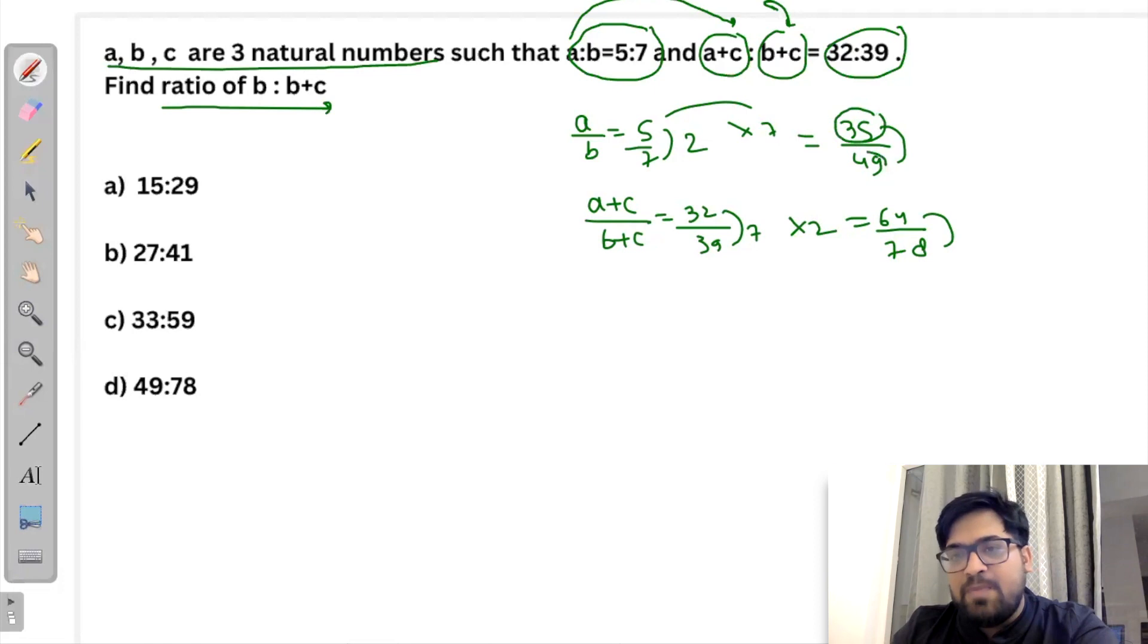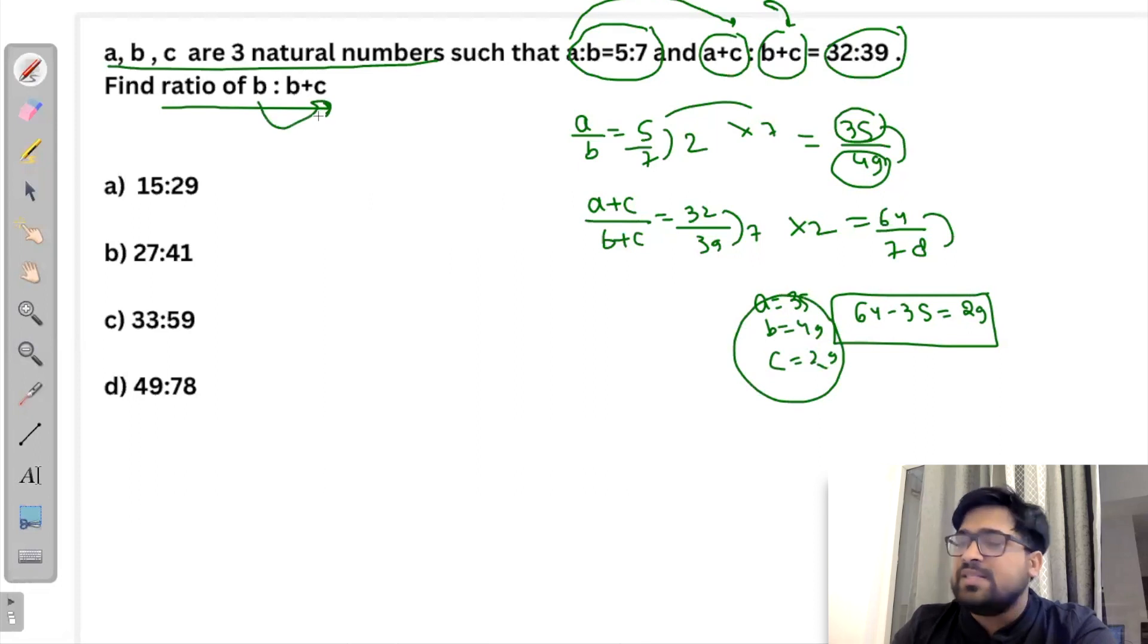Ki ye A hai, ye B hai. And usme C addition ho raha. What is the C addition? So agar C ki value ko dekhe, that is 64 minus 35, that is equal to 29. That is the value of C. So A ki value 35, B ki value 49, and C ki value 29. Now you can find the ratio of B is to B plus C.